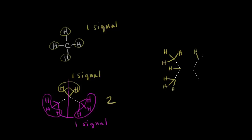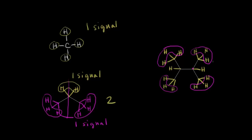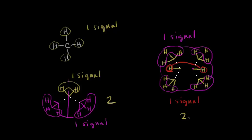Let's draw in all the protons for the next molecule. We have methyl protons here, a proton on this carbon, and all of these protons. The methyl protons are in their own environment, and that environment is the same as all of the other methyl protons — they're all right next to a carbon with a hydrogen on it — so we'd expect one signal for those. This proton here is in a different environment from the methyl protons, but it's in the same environment as this other proton, so we'd expect one signal for those red protons. A total of two signals for the molecule.